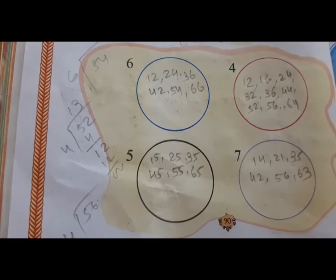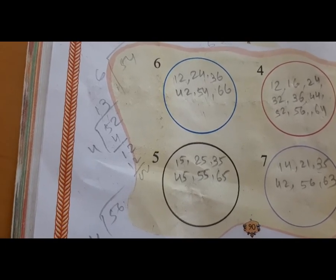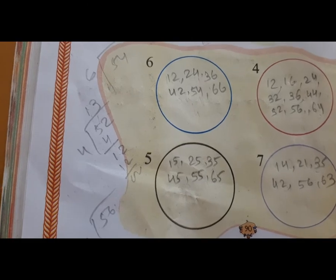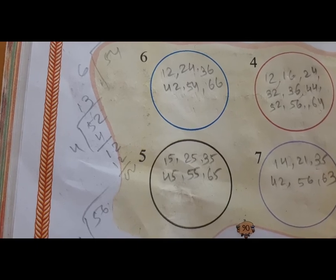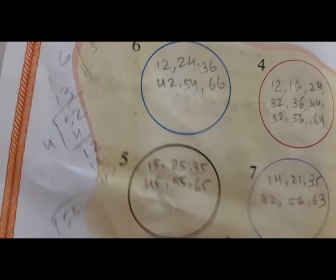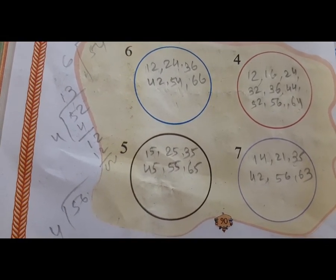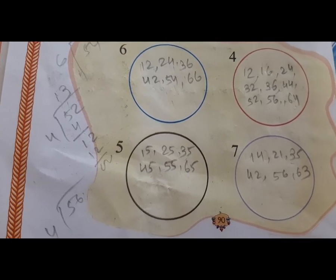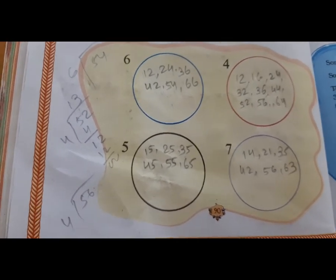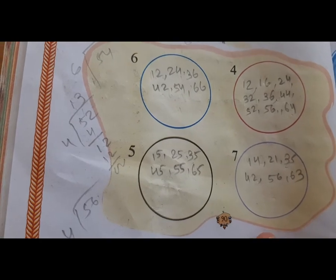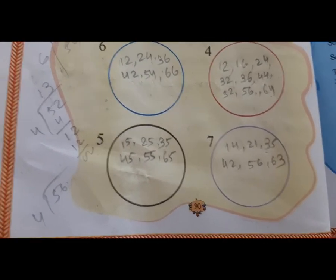So the multiples of 6 that we wrote are: 12, 24, 36, 42, 54, 66 — all are multiples of 6. Multiples of 4: 12, 16, 24, 32, 36, 44, 52, 56, 64. Multiples of 5: 15, 25, 35, 45, 55, 65. Multiples of 7: 14, 21, 35, 42, 56, 63. All these can be seen on the dice by forming 2-digit numbers — all are multiples of 4, 5, 6, or 7.